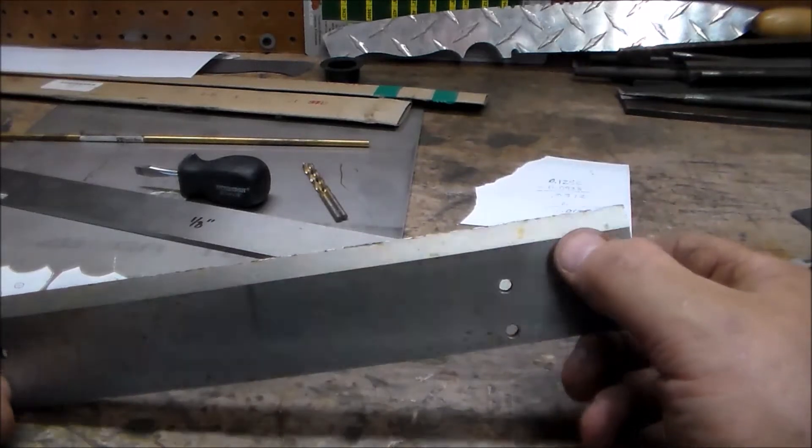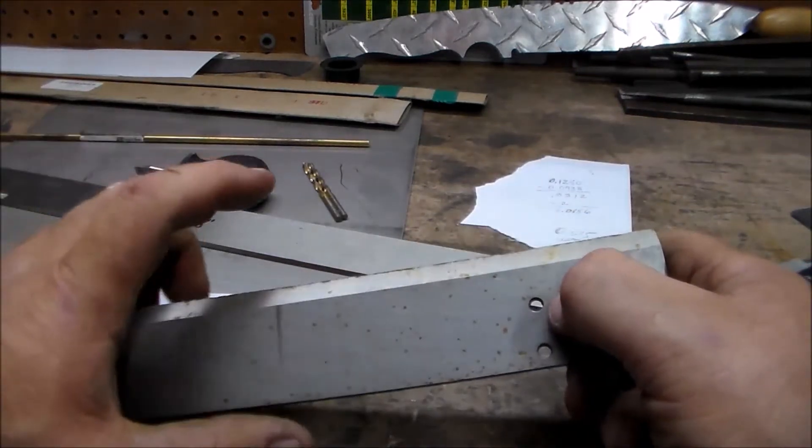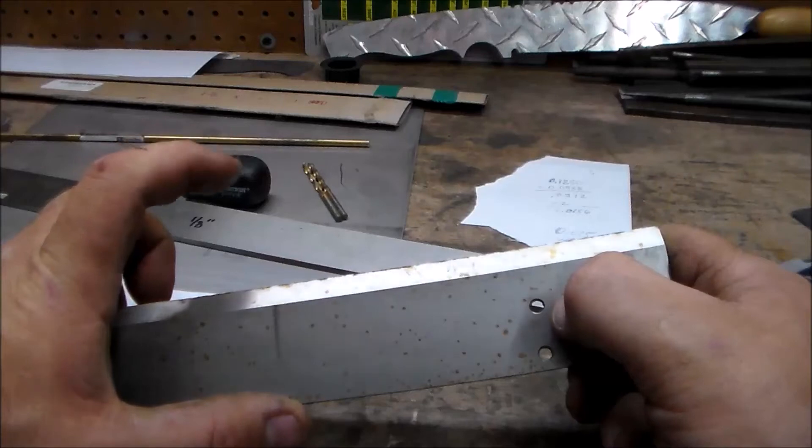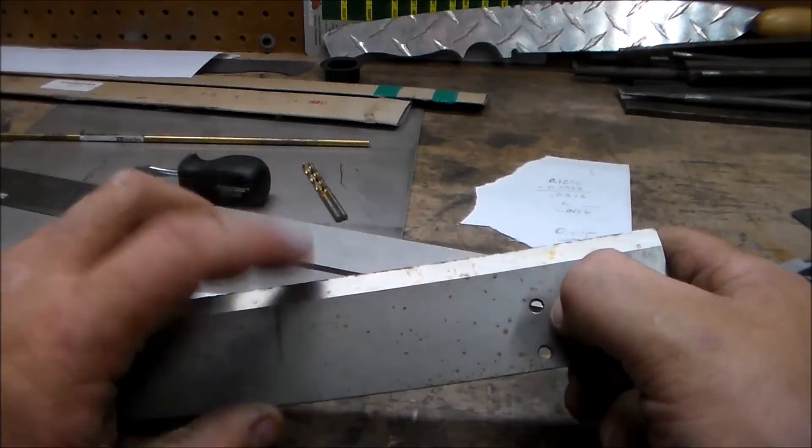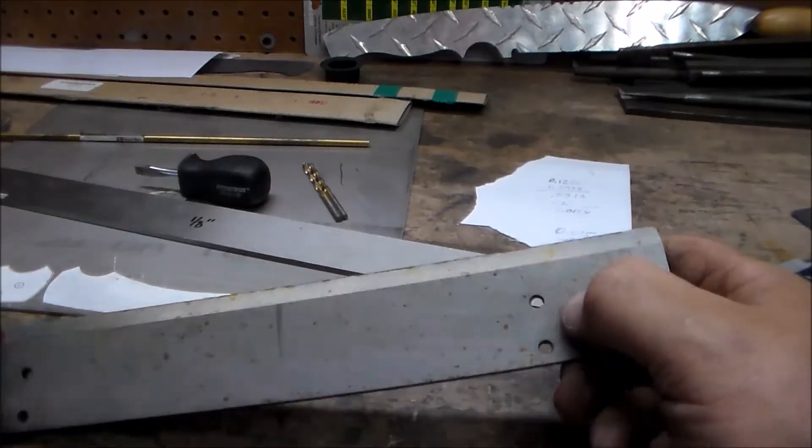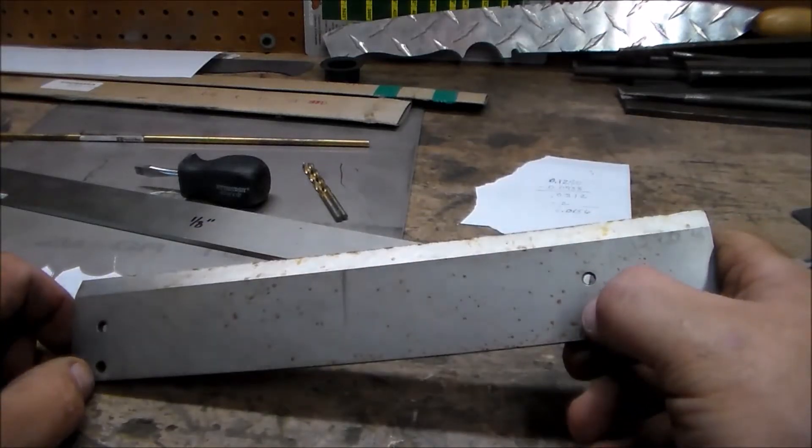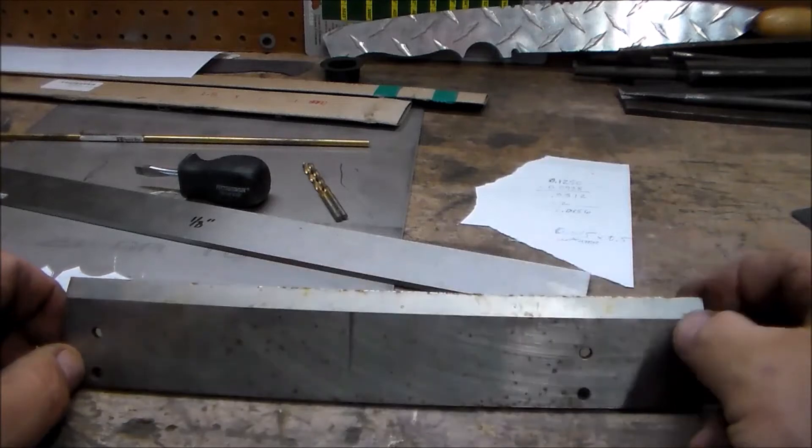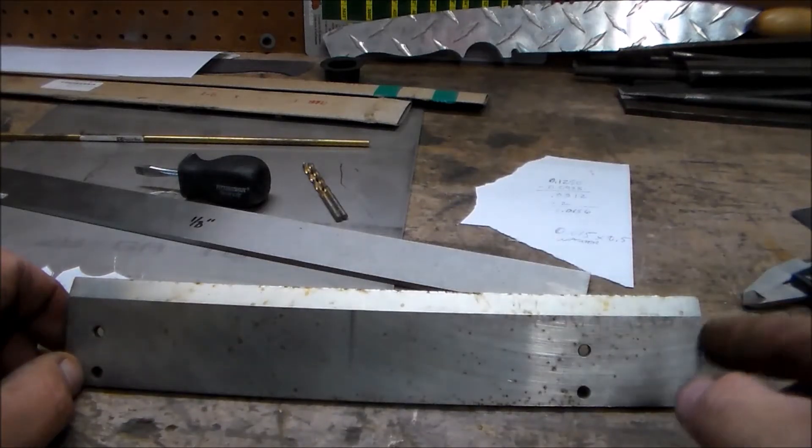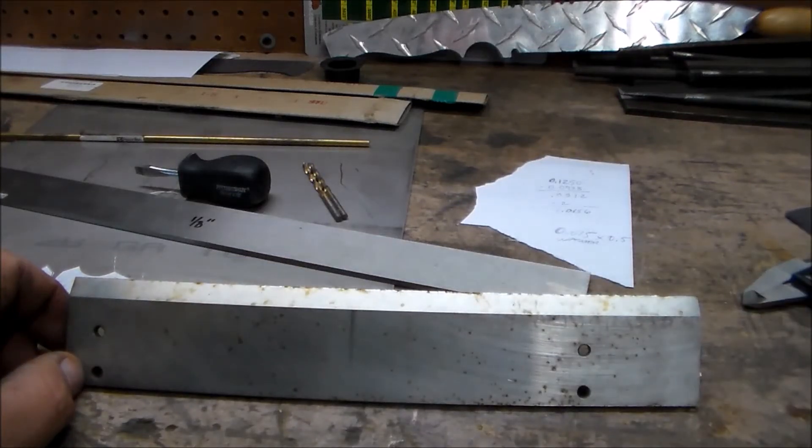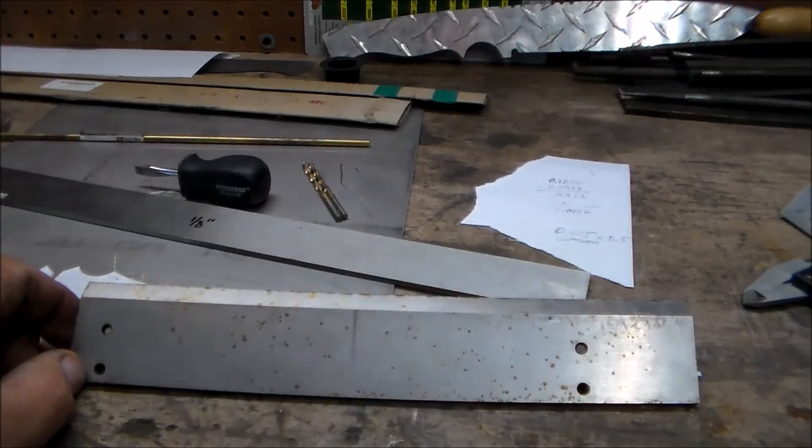He says these things start off at about four inches wide and as they're sharpened throughout their life, when they get down to this size, they throw them out. This piece is three or four feet long, so they're huge blades. And this is a piece of a piece of one that he's already made a knife out of. This is the cutoff piece.